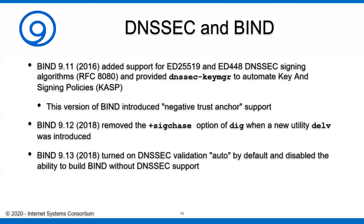BIND 9.11 in 2016 added some additional elliptic curve algorithms for DNSSEC signing. It also provided the DNSSEC key manager, which assists in automating key and signing policies. This version of BIND also introduced something called a negative trust anchor, which we'll get into later in the series.